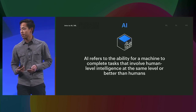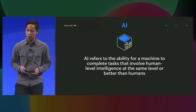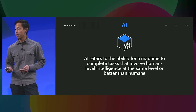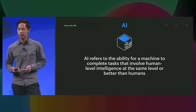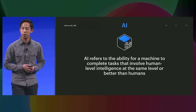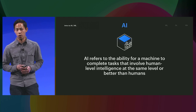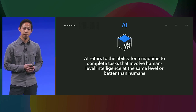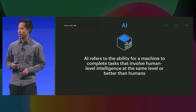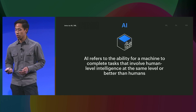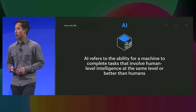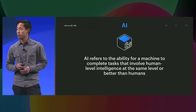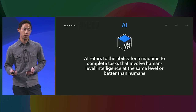In contrast, most of what we'll talk about today and tomorrow, and a lot of the work being done now, is narrow AI — the ability for a machine to perform a specific task. That could be understanding what's in an image, translating languages, or making business predictions for your company.